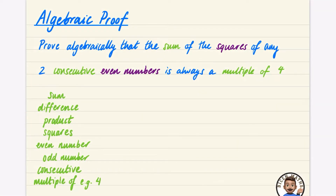In this playlist of videos I'm going to talk about algebraic proof, which is a combination of some stuff to do with proof and really just an opportunity to demonstrate a lot of the algebraic skills that you've learned over the course of the GCSE. I'm going to introduce this topic by looking at the kind of question we've got here and figuring out what some of these keywords actually mean.